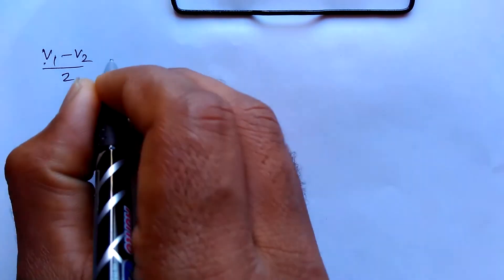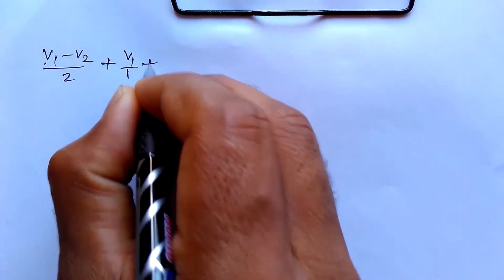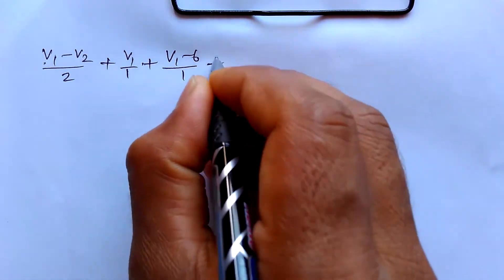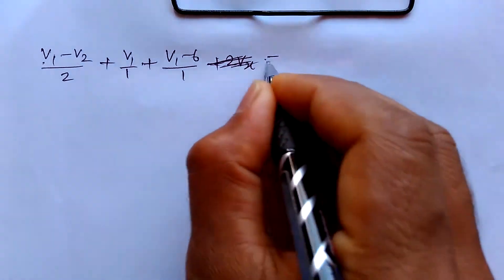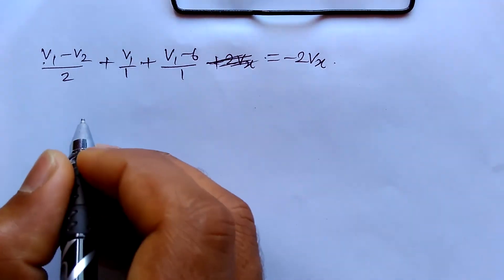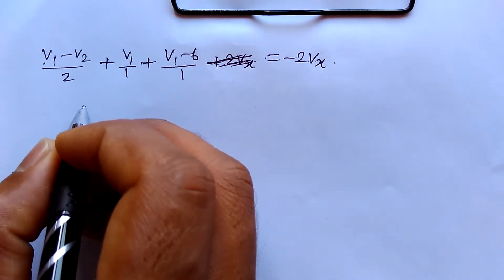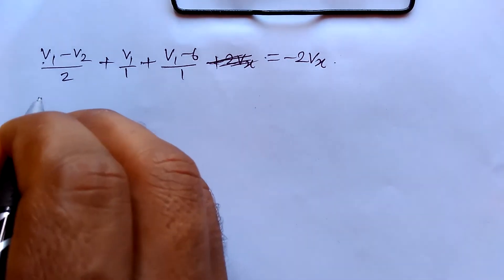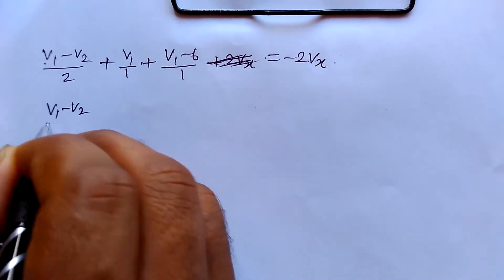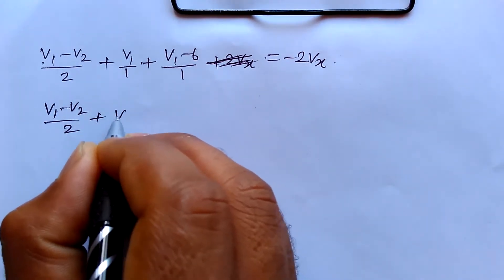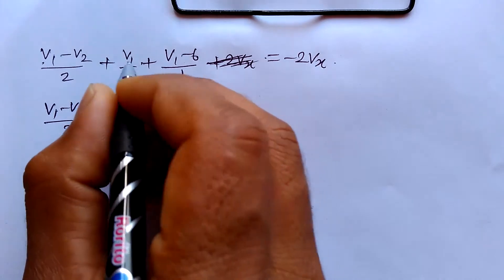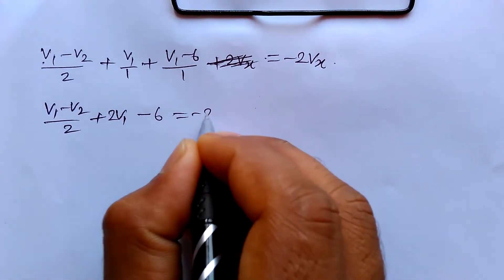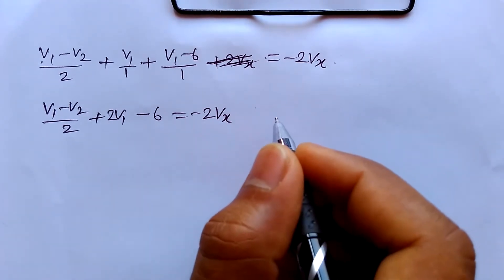We can write it further: (V1 minus V2) over 2, plus V1 over 1, plus (V1 minus 6) over 1, minus 2Vx equal to 0. Normalizing this equation gives us the combined node 1 equation with all terms on one side equal to minus 2Vx.